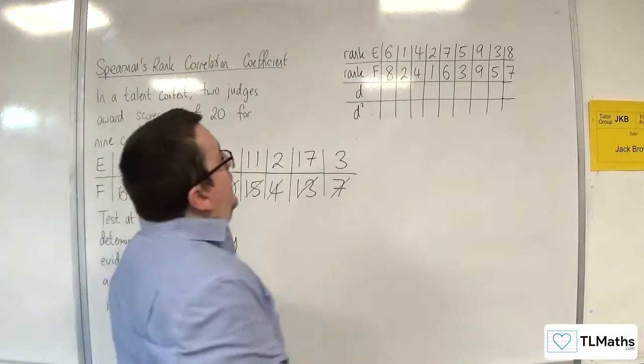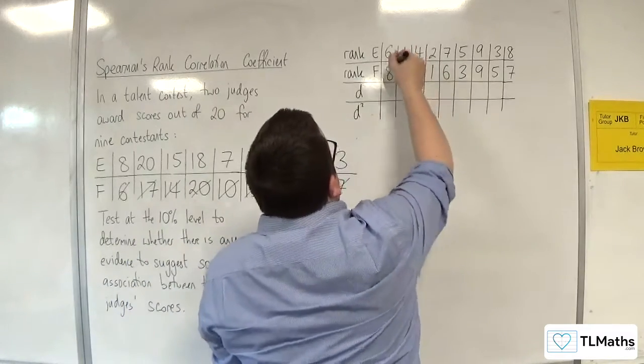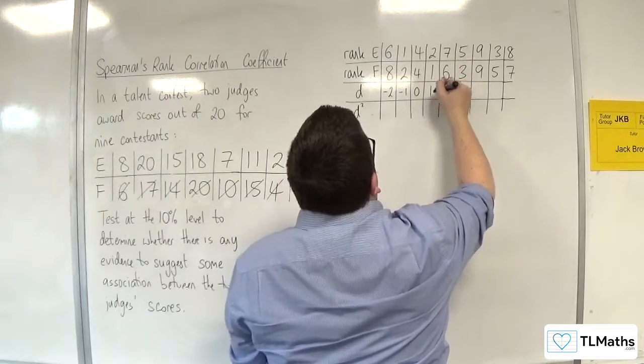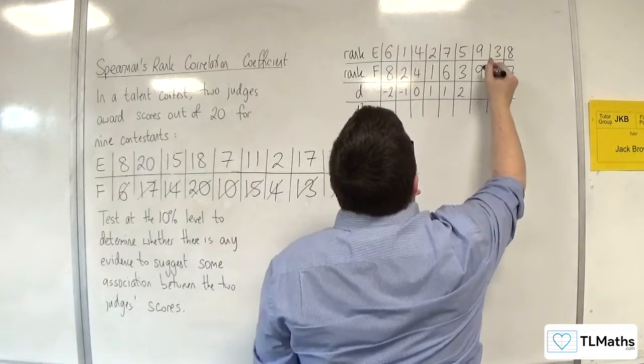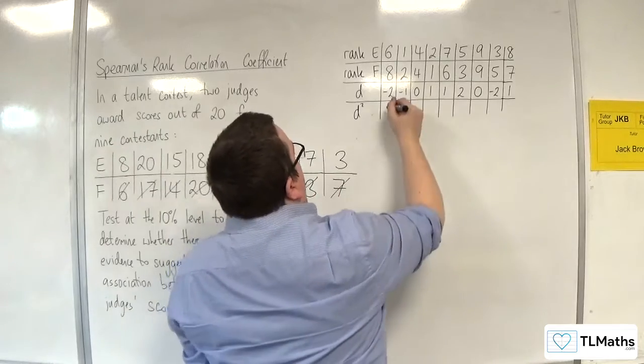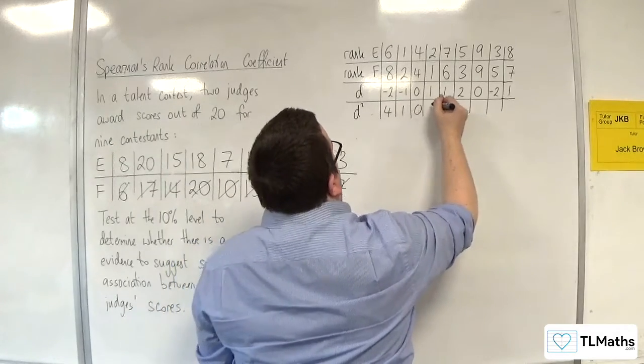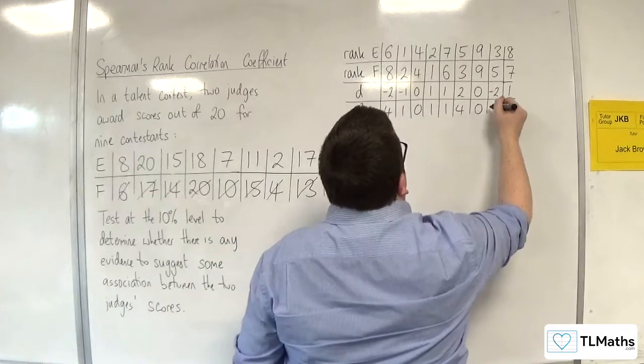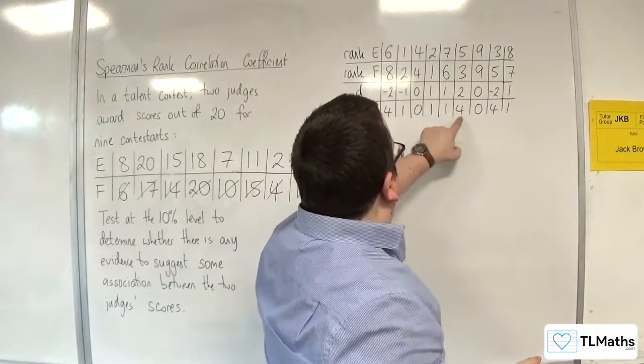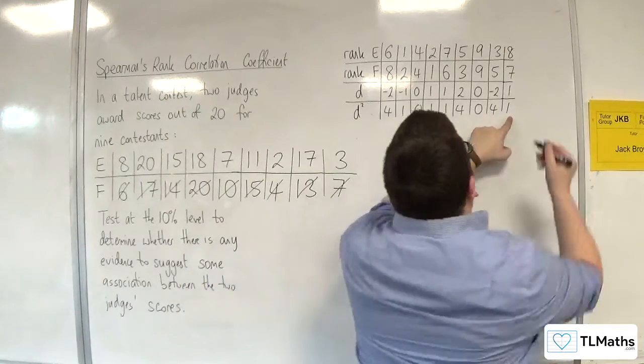Now we need to work out the difference: minus 2, minus 1, 0, 1, 1, 2, 0, minus 2, 1. Square each of those: 4, 1, 0, 1, 1, 4, 0, 4, 1. So 5, 6, 7, 11, 15, 16. The sum of d squared is 16.